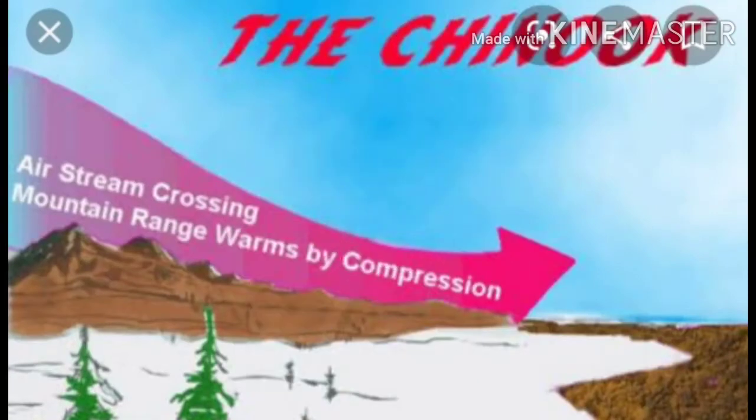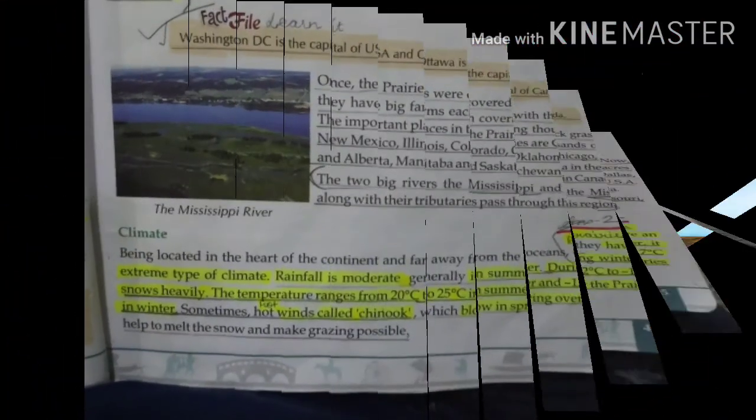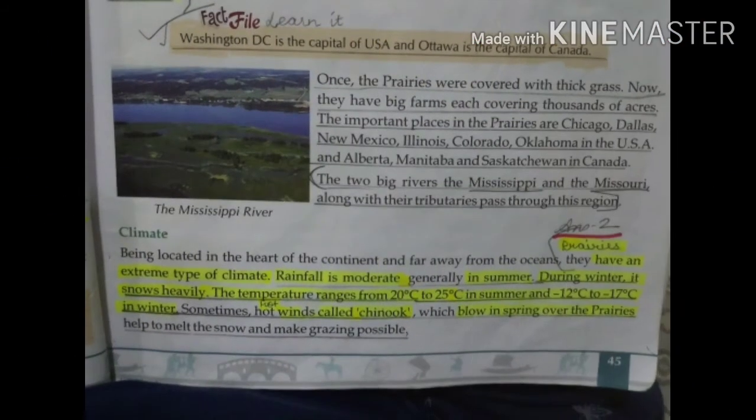In summer, a wind called Chinook blows in prairies. Chinook is a hot wind which helps to melt snow and makes grazing possible, because animals can only graze when the land is clear.